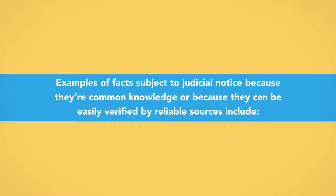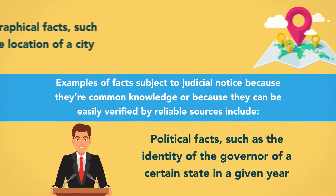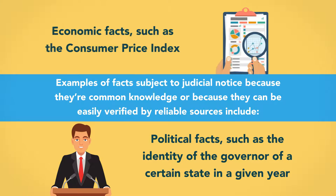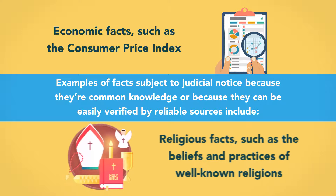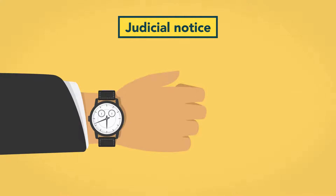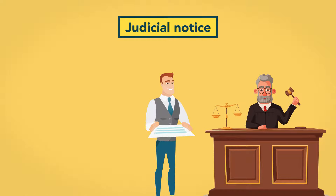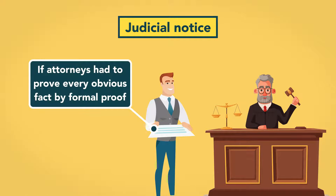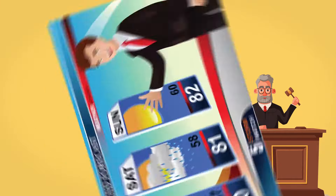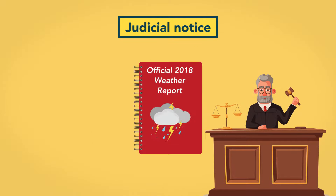Examples of facts subject to judicial notice because they are common knowledge or easily verified by reliable sources include geographical facts such as the location of a city, political facts such as the identity of the governor of a state in a given year, economic facts such as the consumer price index, and religious facts such as the beliefs and practices of well-known religions. Taking judicial notice is a simplification process whose purpose is to conduct a trial more efficiently. It would waste both the court's and the jury's time if attorneys had to prove every obvious fact by formal proof — for example, requiring a party to call a meteorologist to testify that it was raining on a given day, when well-supervised meteorological data can reliably show that it's true.